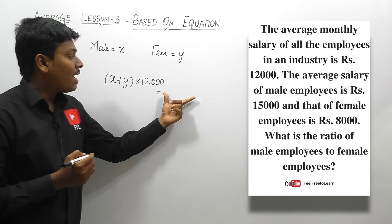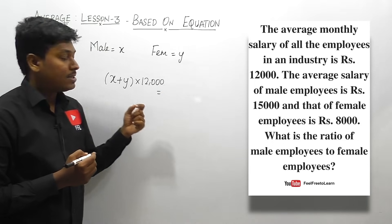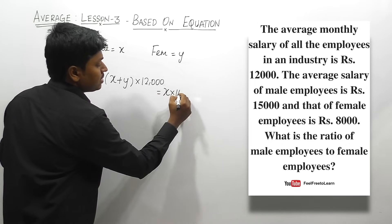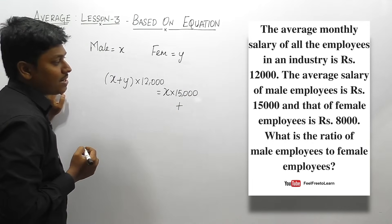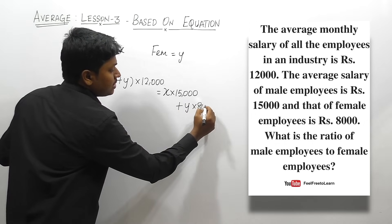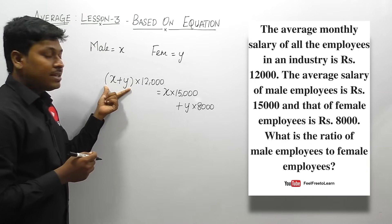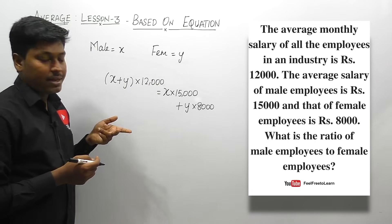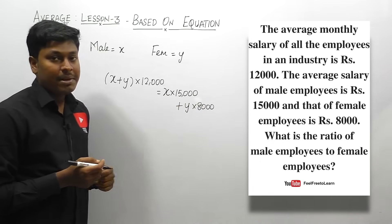This total salary equals total salary of male persons plus total salary of female persons. Male employees are x with average salary Rs. 15,000, so 15,000 into x is the total male salary. Female employees are y with average Rs. 8,000, so y into 8,000 is the total female salary. So (x plus y) into 12,000 equals 15,000x plus 8,000y.